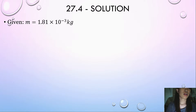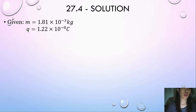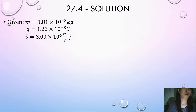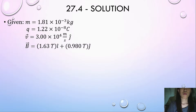In this problem, consider a particle with mass m equals 1.81 times 10 to the negative 3 kilograms and charge q equals 1.22 times 10 to the negative 8 Coulombs. At a given instant, it has a velocity of 3.0 times 10 to the 4 meters per second j-hat. We need to find the magnitude and direction of the particle's acceleration produced by the uniform magnetic field given by 1.63 tesla i-hat plus 0.980 tesla j-hat.